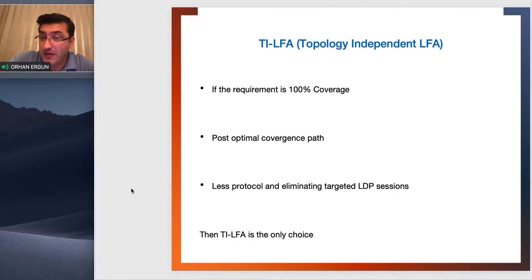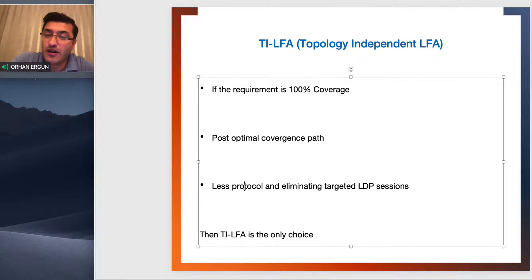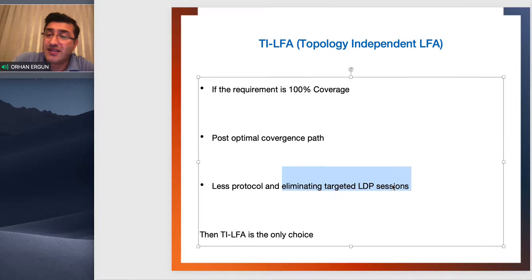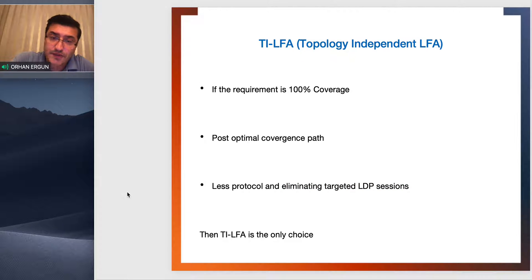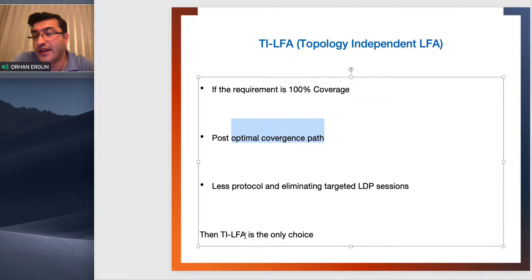More topology coverage — it is really good, but you need to understand the segment routing terminology. So the requirements are: 100% coverage, post-optimal convergence path, and eliminating protocols for a simplified overall solution. If the requirement is 100% coverage, TI-LFA is not the only choice — RSVP FRR is another. For post-optimal convergence path, TI-LFA is the only choice, or the combination.